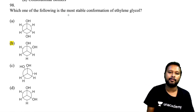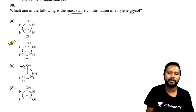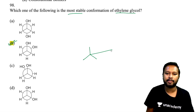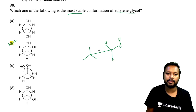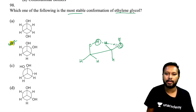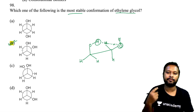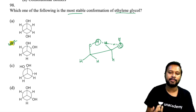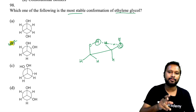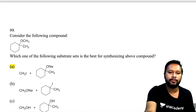Question 98 asks which conformation of ethylene glycol is most stable. Option B is correct: the gauche conformation allows intramolecular hydrogen bonding between the OH groups — the hydrogen of one OH bonds to the oxygen of the other. This intramolecular H-bonding provides extra stability to the gauche form. This question has also appeared in CSIR NET.